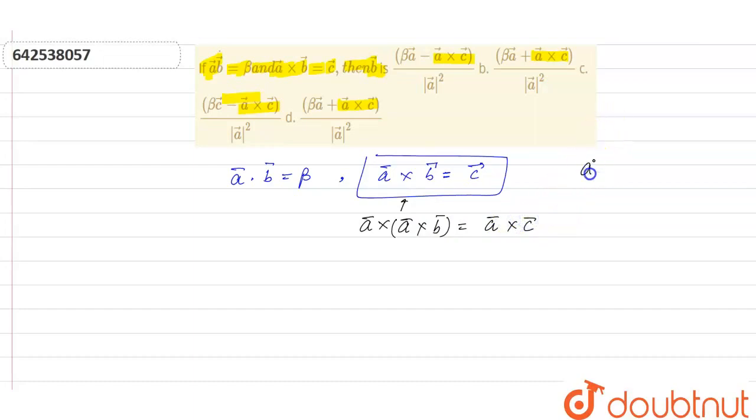Now, we know that the formula of vector triple product A⃗×(B⃗×C⃗) is (A⃗·C⃗)B⃗ - (A⃗·B⃗)C⃗.